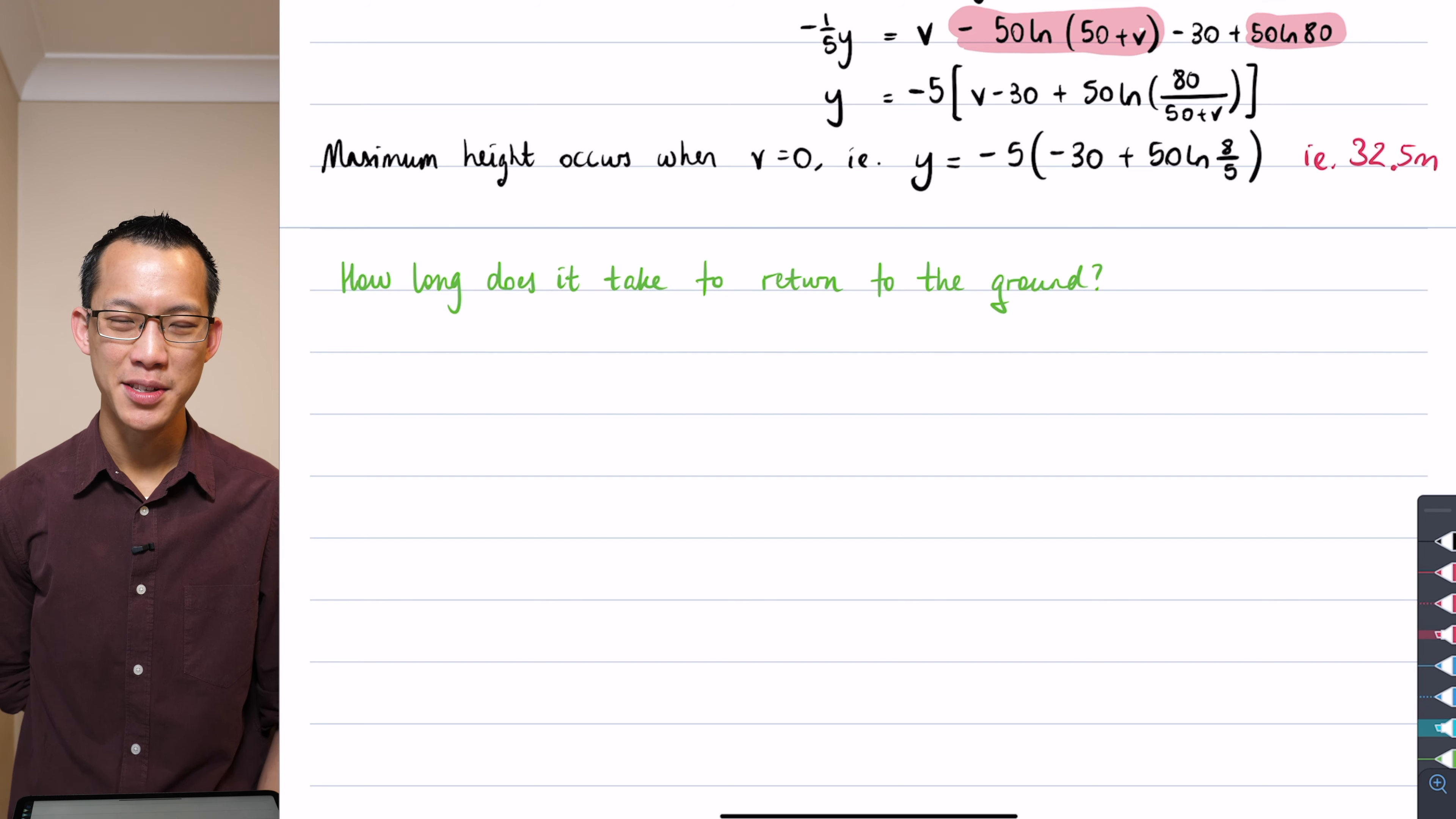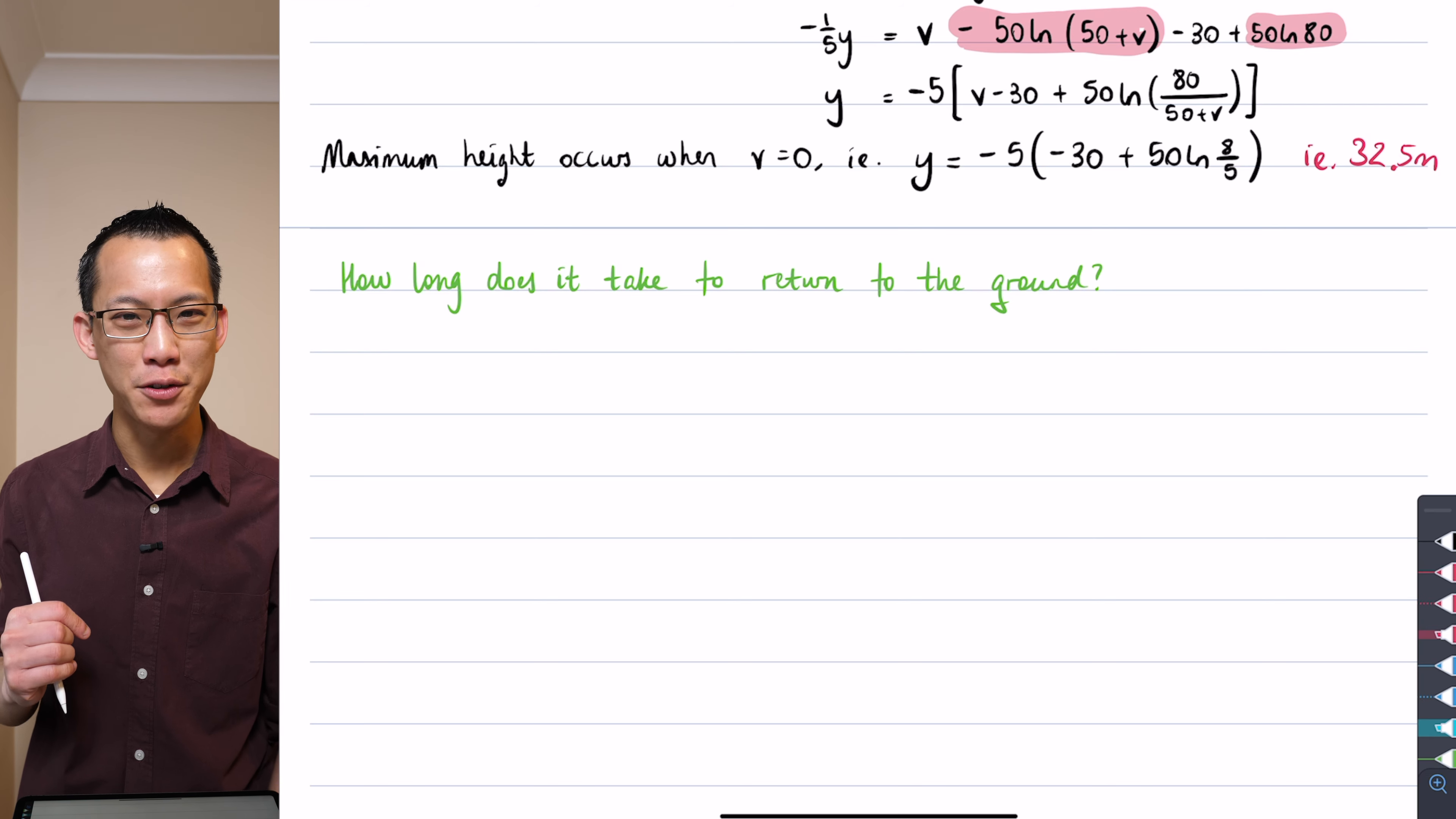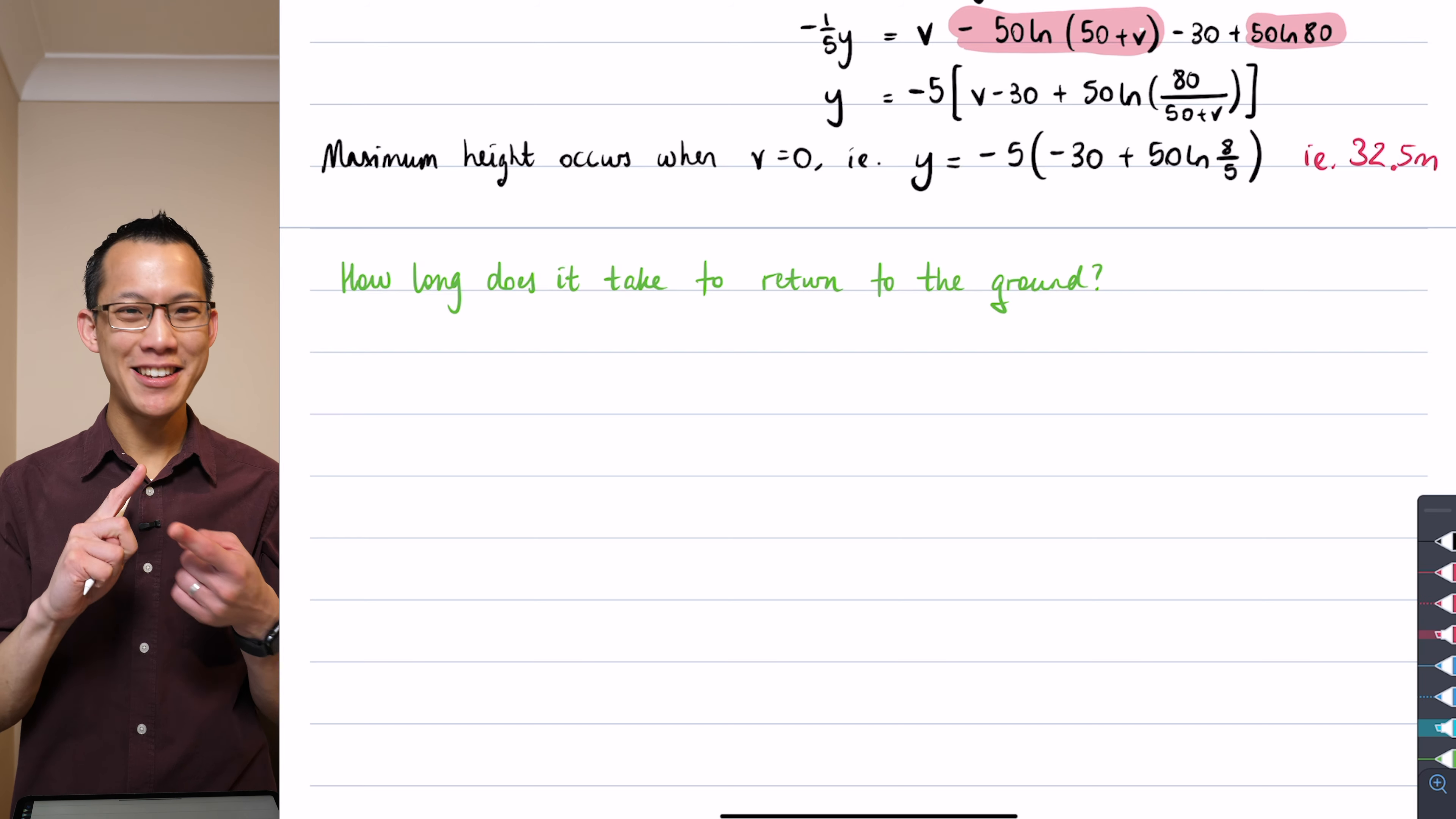You're going to need some technology to help you with this. I hope this rings a bell from like some of the statistics that you did, dealing with say the probability density function of the normal distribution. You could not integrate that thing by hand, it's just a mess, so therefore we use technology or tables to be able to read the appropriate values to get the area under the curve. So you're going to need some technology to help you with this. So I encourage you to use Desmos. You don't have to use it in a very sophisticated way, but the equation you're going to get, you're not going to solve by hand. You'll need something that can solve it for you. So I mean you could use WolframAlpha or something like that if you prefer, but I'm certainly going to show my solution through Desmos.